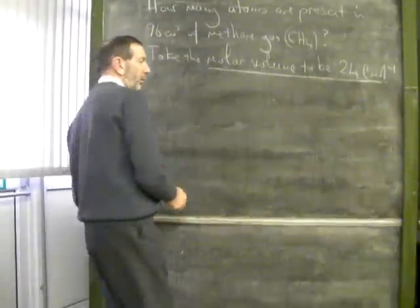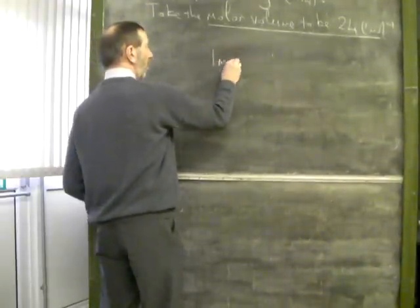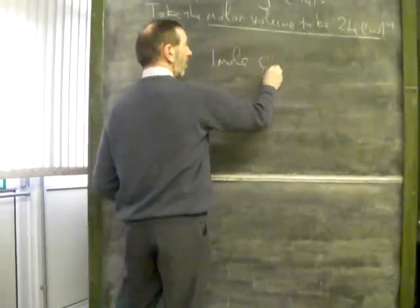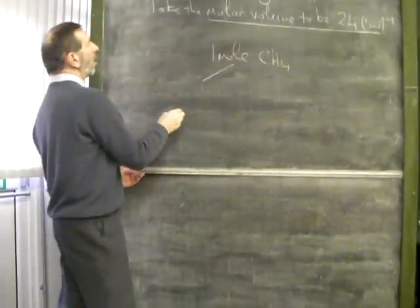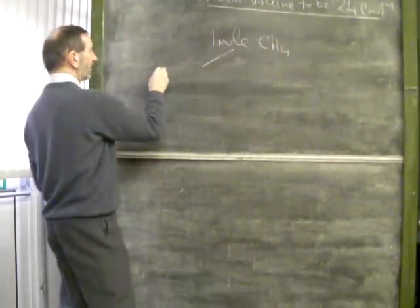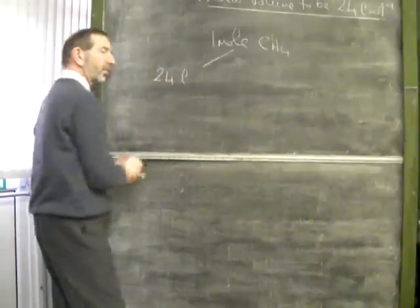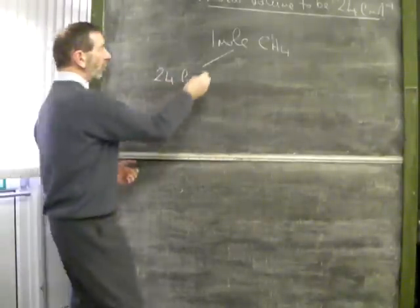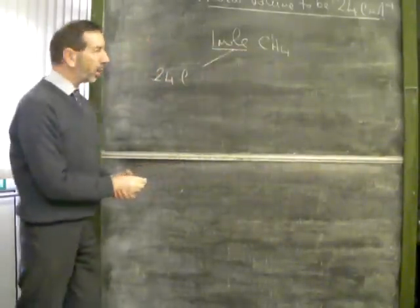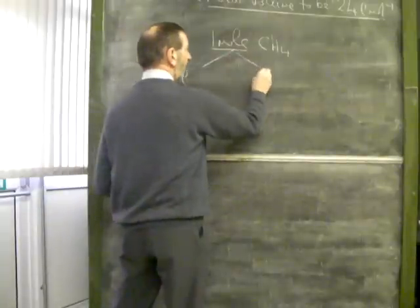Well, we know one or two things for sure. We know one or two facts about one mole of methane. We know that one mole of methane, according to the molar volume, occupies 24 liters. We also know, because we have a mole, that we're talking about Avogadro's number.